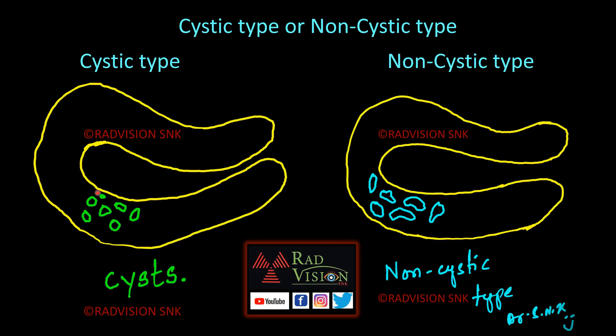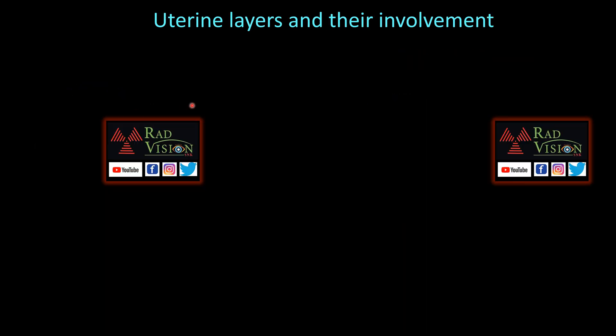You also have to differentiate the cystic type from the non-cystic type of adenomyosis. Additionally, we need to stratify the layers of the uterus and describe the involvement of each layer.